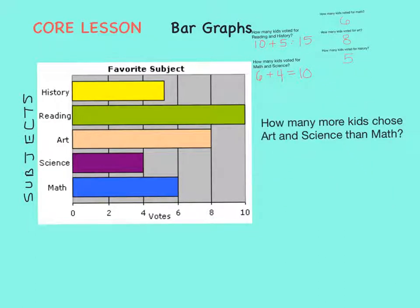How many more kids chose art and science than math? First we'll need to add art and science together to see how much they are. Well, art received eight votes and science received four votes. Eight plus four equals twelve.